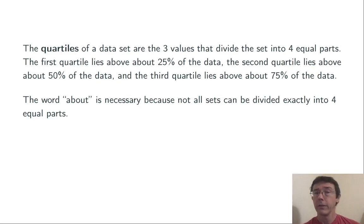The quartiles of a data set are the three values that divide the set into four equal parts. The first quartile lies above about 25% of the data, the second quartile lies above about 50% of the data, and the third quartile lies above about 75% of the data. The word 'about' is necessary because not all sets can be divided exactly into four equal parts.